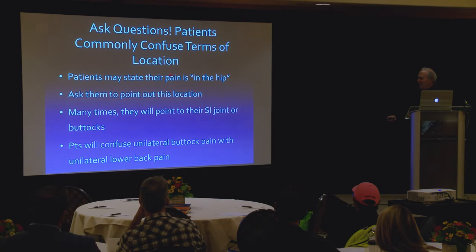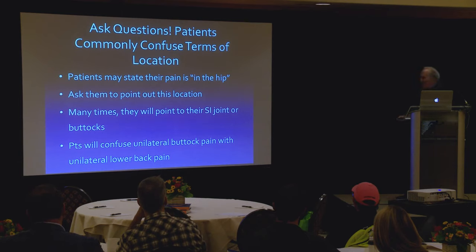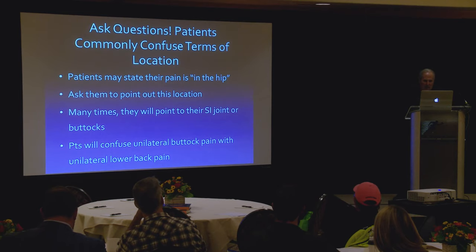Patients confuse things with verbal skills. Ask them to point out where their pain is, because so many times they won't know. They'll say it's in the anterior thigh, but then point to the lateral lower knee. They'll confuse unilateral buttocks pain with unilateral low back pain. So you may need to palpate their spine — it's still history, but it's part of the physical exam. They're going to point to you where their pain is. This is really important.